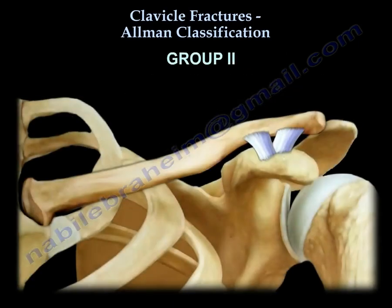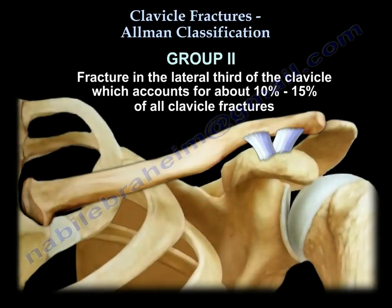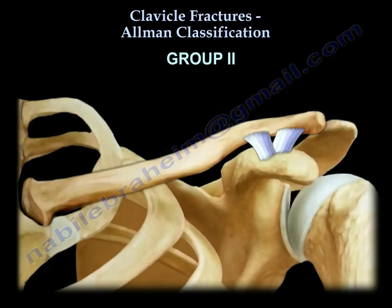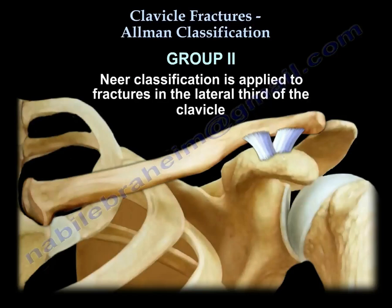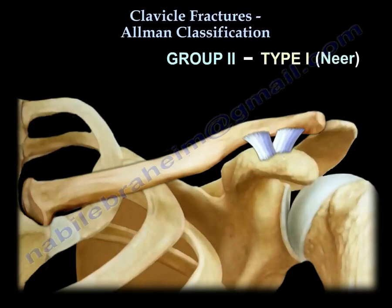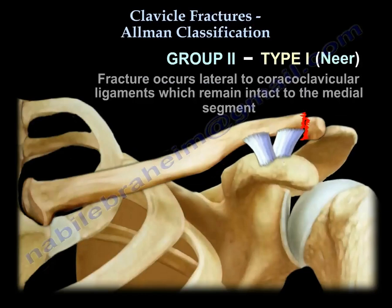Group 2 is a fracture of the lateral third, which is about 10-15% of all fractures of the clavicle. We apply the Neer classification to the lateral third of the clavicle. In Neer Type 1, the fracture occurs lateral to the coracoclavicular ligaments — the trapezoid and conoid — meaning the coracoclavicular ligaments are intact and attached to the medial segment, keeping the fracture minimally displaced or undisplaced.